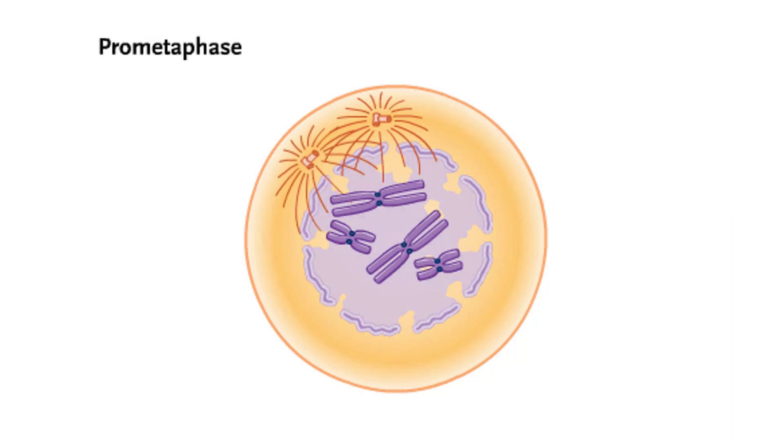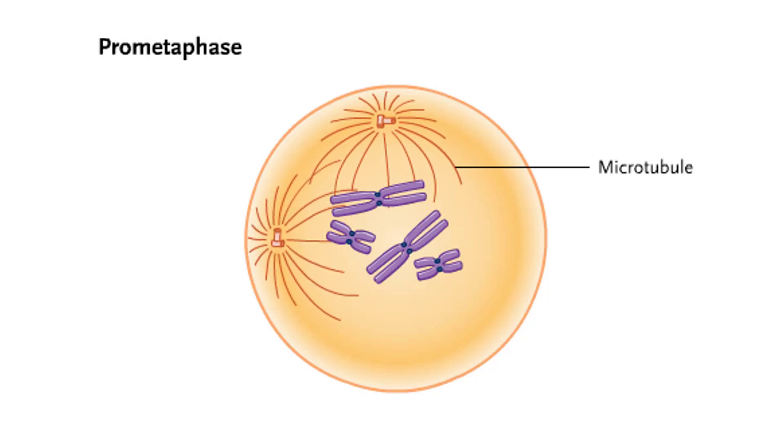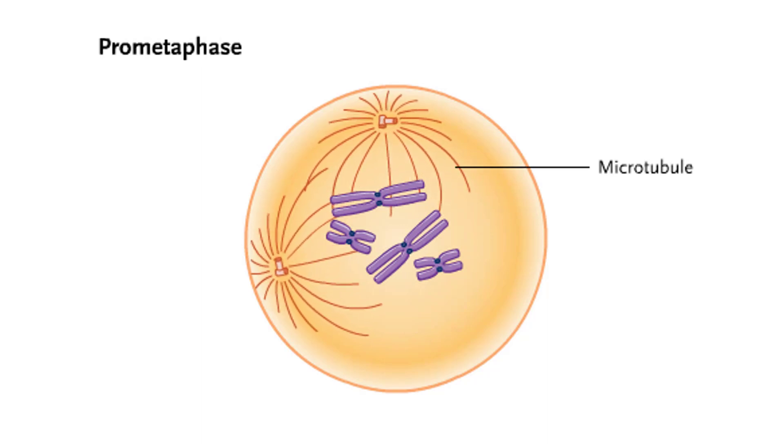During the transition to metaphase, the nuclear envelope breaks up completely. Microtubules penetrate the nuclear area and form the spindle apparatus.